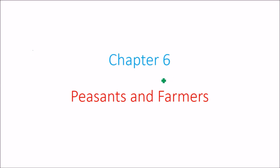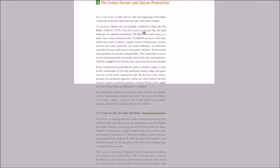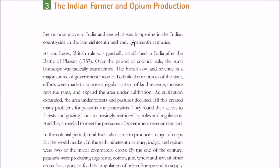This is Chapter No. 6: Peasants and Farmers. What we discussed in earlier sessions was the situation of peasants and farmers in England and USA. The differences were there, but certain similarities were also there.